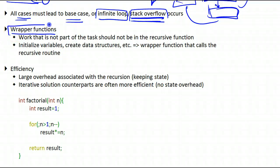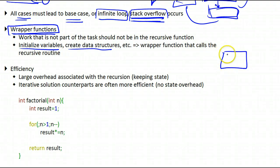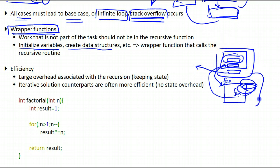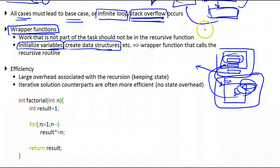Sometimes there will be a need for wrapper functions. We might have a problem that requires more than just recursion and a base case — for example, initializing some variables or creating data structures before making a recursive call. In that case you'd have two functions: one that performs the initializations, creates the data structure, and then calls the recursive function, which is the one that calls itself. At the end it returns a value, and you return the solution to the caller. This is called a wrapper function — it wraps the recursive function.